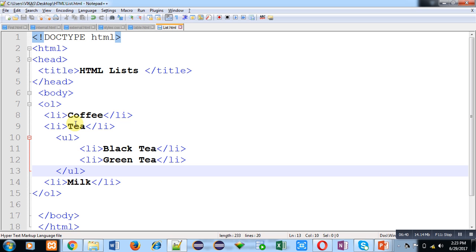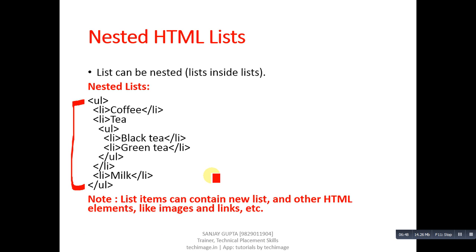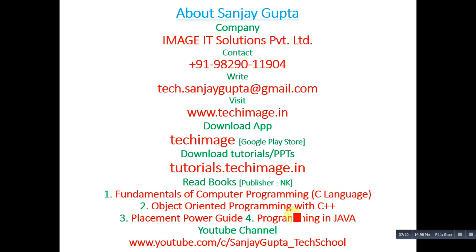Implement all three types of lists — unordered, ordered, and description — in your text editor and execute the HTML code in a browser. Note that a list item can contain a new list and other HTML elements like images and links, so you can also implement hyperlinks and images within a list item. Do practice all these codes so you can understand how to display lists in a web browser. Thank you for watching this video.